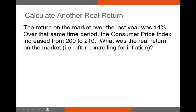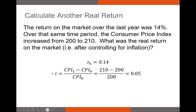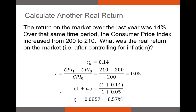One more example where we actually calculate the inflation. The return on the market over the last year was 14%. Over the same period, the CPI increased from 200 to 210. We calculate inflation as the percentage change in CPI: 210 minus 200, divided by 200, gives 5% inflation. Plugging into the Fisher equation — 1.14 divided by 1.05, minus 1 — gives a real return of 8.57%.